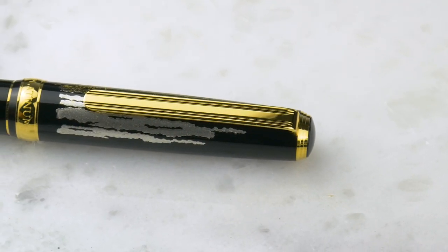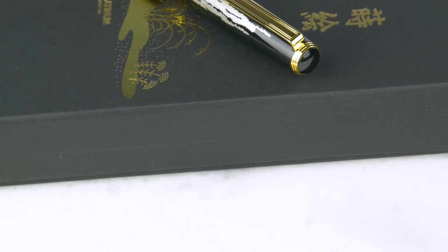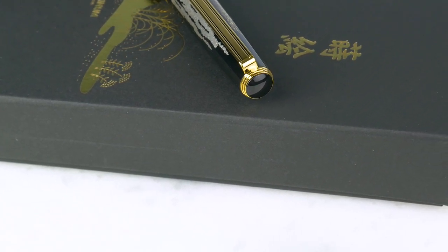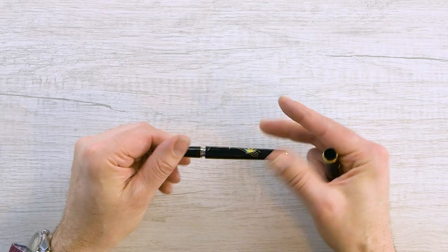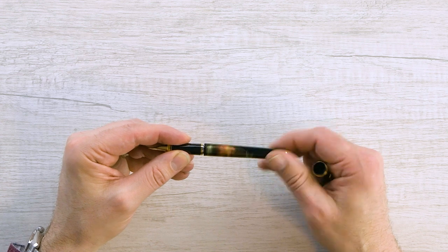We've got a nice gold clip here. Our top's got a nice little black jewel. Same to match the end. Like I say, it's a cartridge converter pen. It comes with the cartridge. Platinum only. But the converter fits in there nicely.